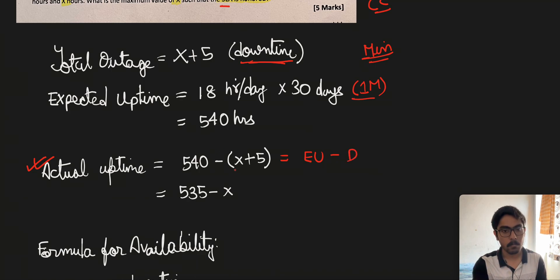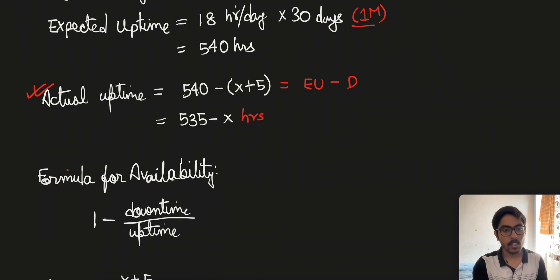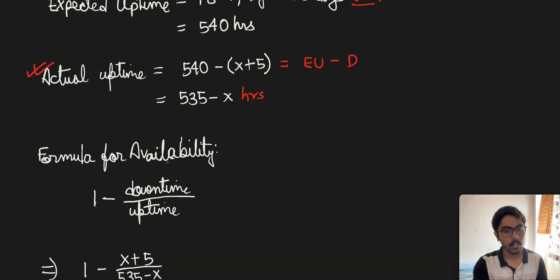The actual uptime is 540 minus (X plus 5), which is the downtime we calculated above. This comes out to be 535 minus X hours. Now we have the main formula for this problem, which is the formula for availability.